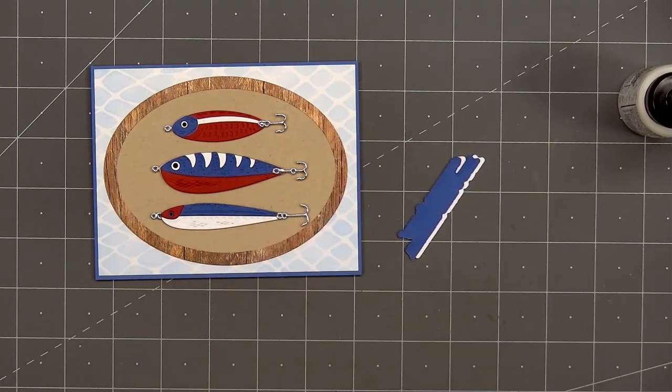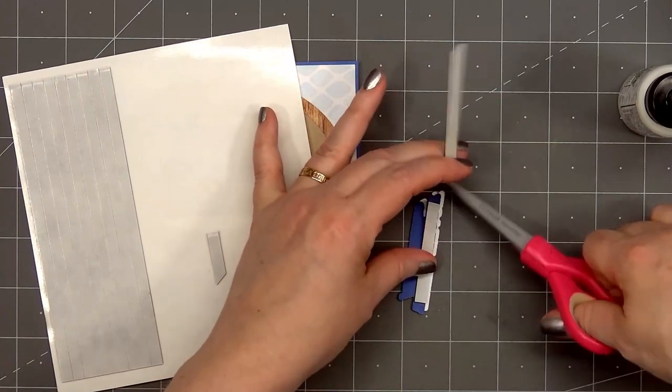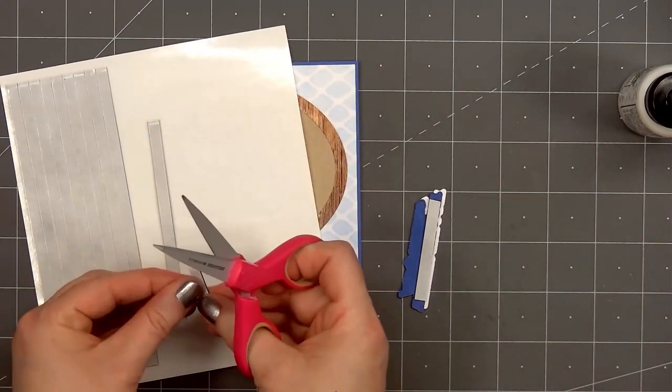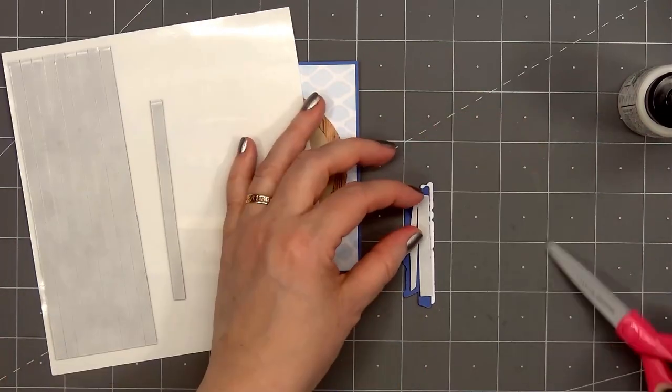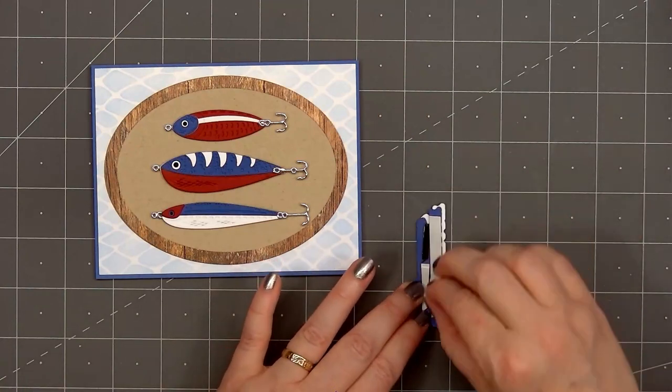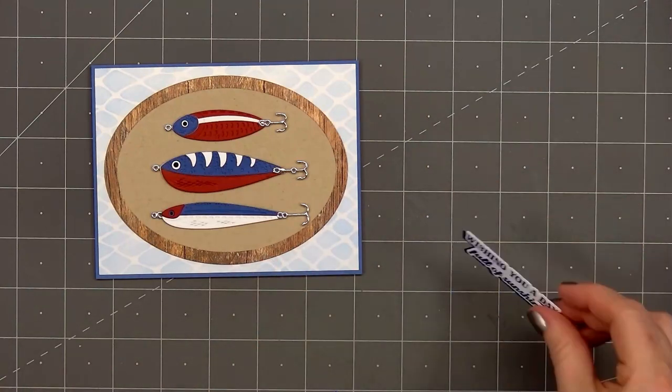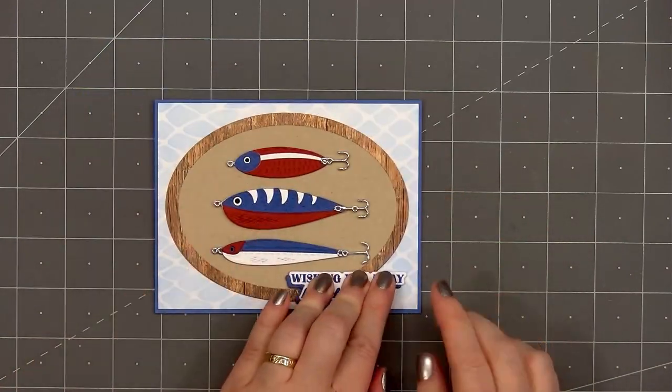Then I'll add some foam dimension on the back side, remove the release paper, and adhere the sentiment in the lower right hand corner. I'm using more of Honey Bee Stamps thin black foam strips. It's nice that you can easily trim them in half. The ink color I use for the sentiment is the same one I use for the stencil, Suede Shoes by Katherine Pooler.